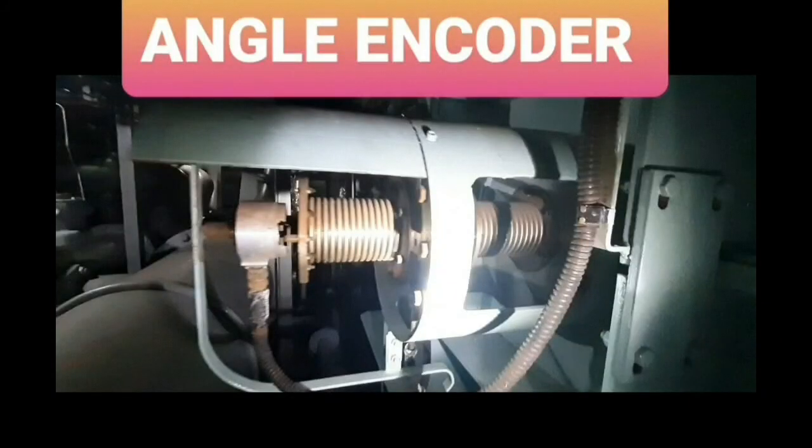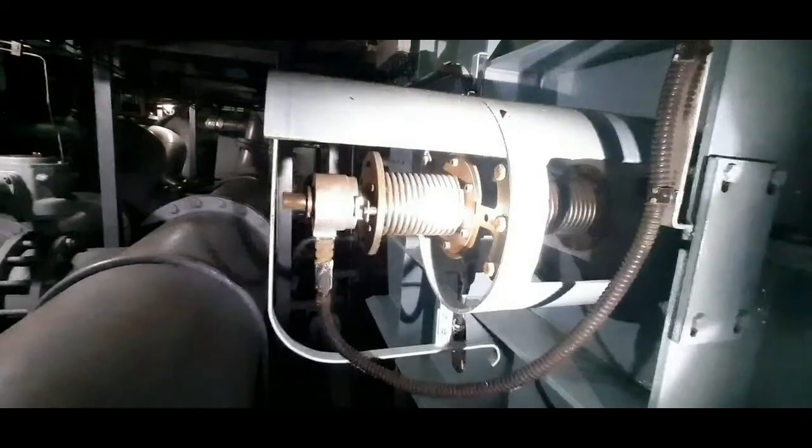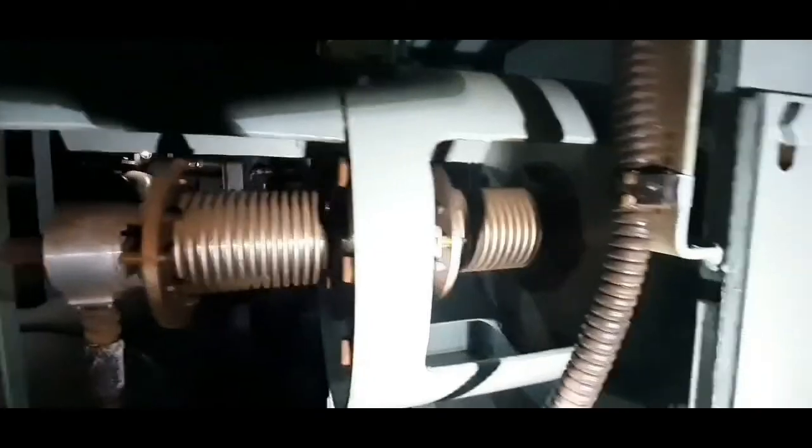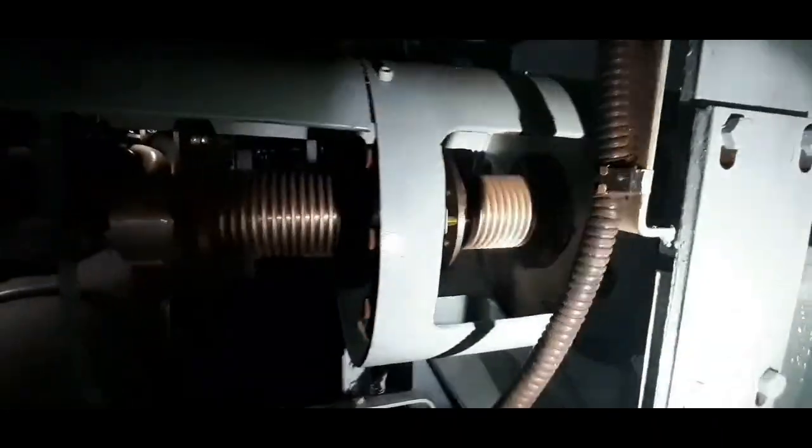Also, the angle encoder fitted on the free end of the main engine crankshaft detects the absolute position of the crankshaft angle and conveys signal to ECU, the Engine Control Unit, and Data Acquisition Unit via the tacho system.